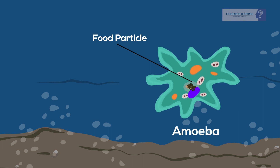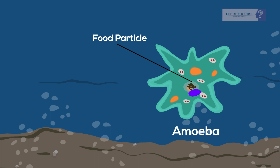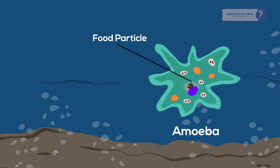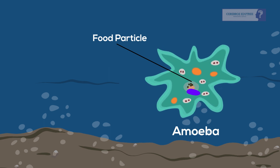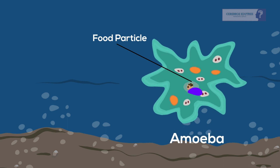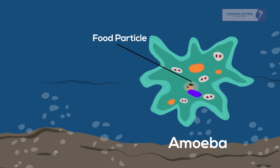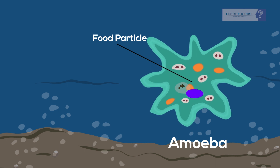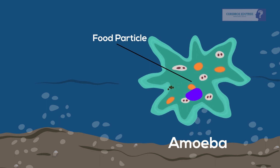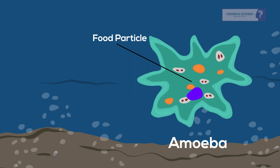Once trapped, digestive juices are secreted into the food vacuoles to break it down into simpler substances, which gradually gets absorbed into the amoeba. The absorbed food is used for growth, multiplication, and maintenance of amoeba, whereas undigested residue of food is expelled outside by the vacuoles.